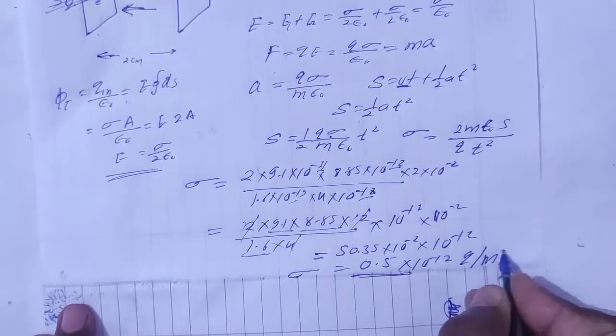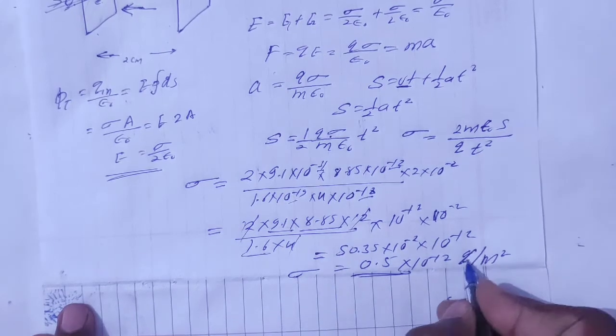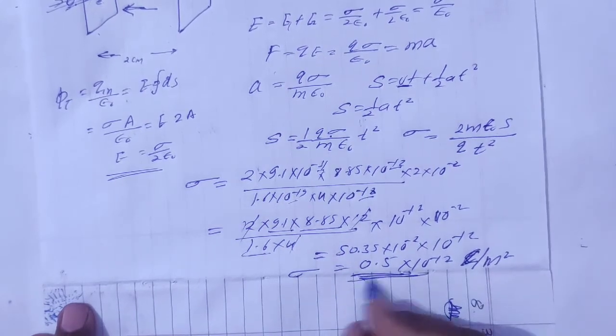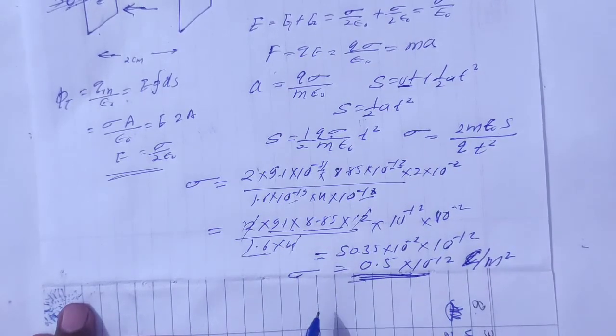Coulomb per meter squared. This will be the charge density of 0.5 into 10 to the power minus 12.